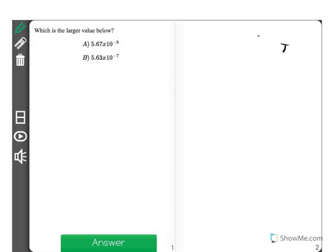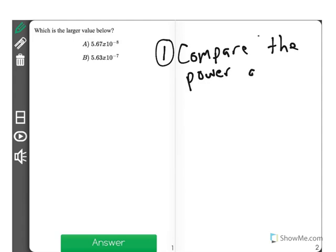Now, when you're comparing numbers in scientific notation, step 1: compare the power of 10 exponent.